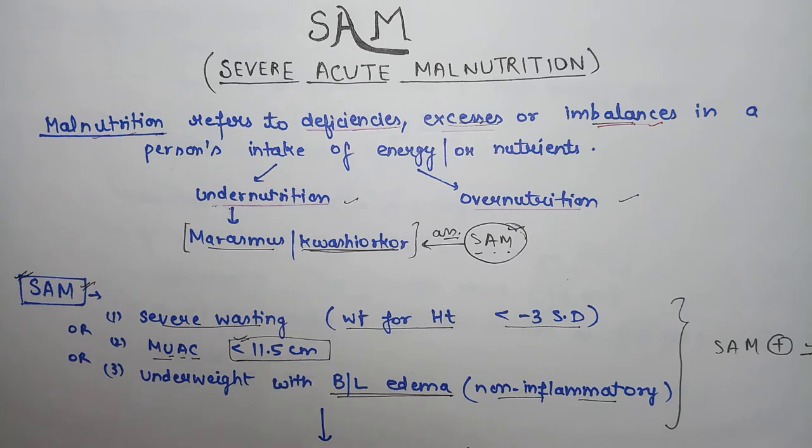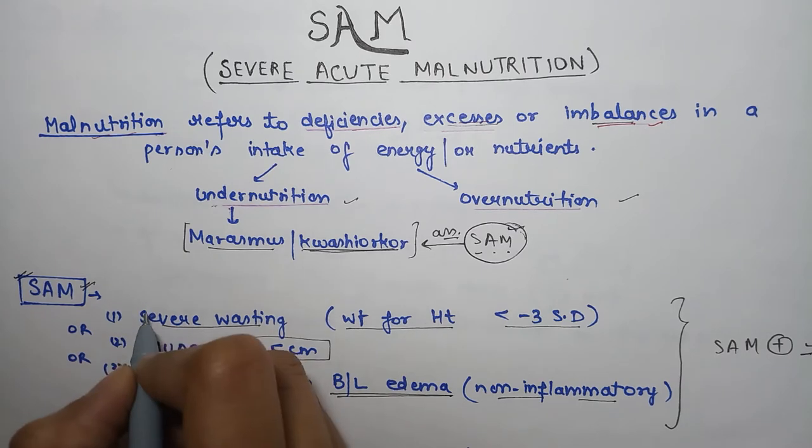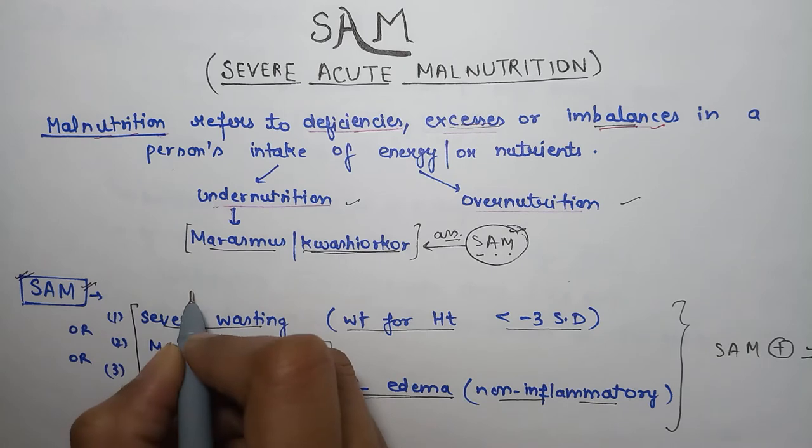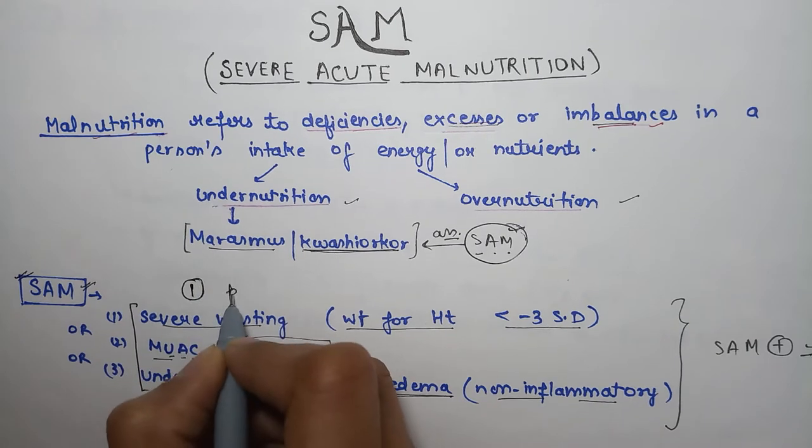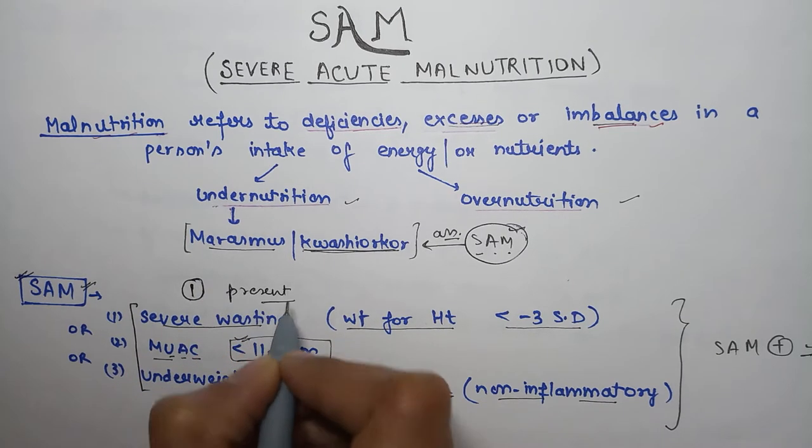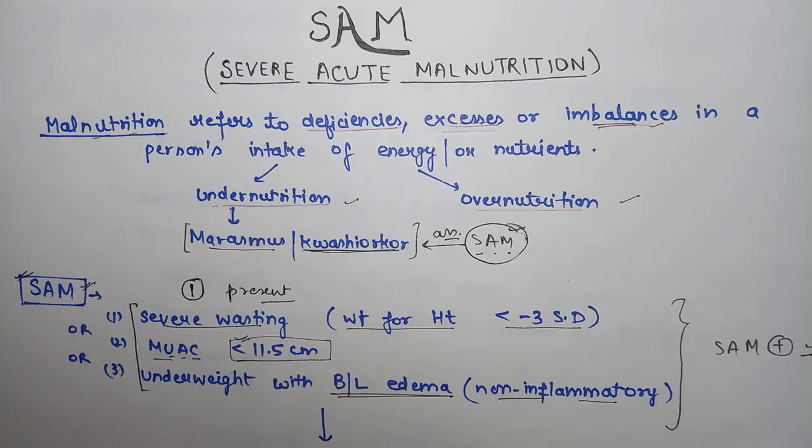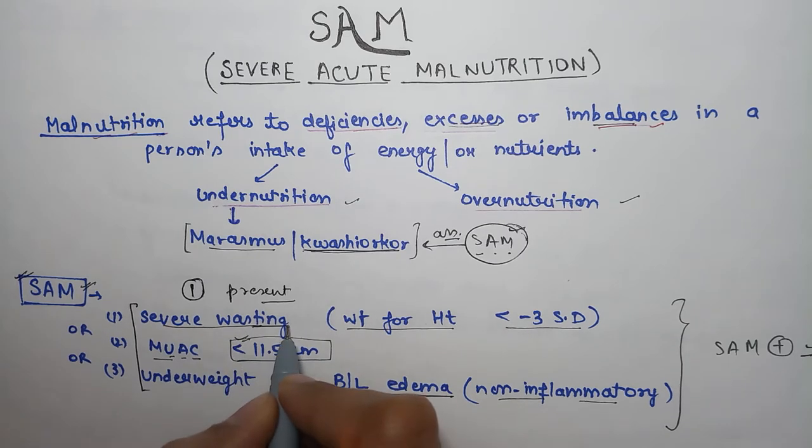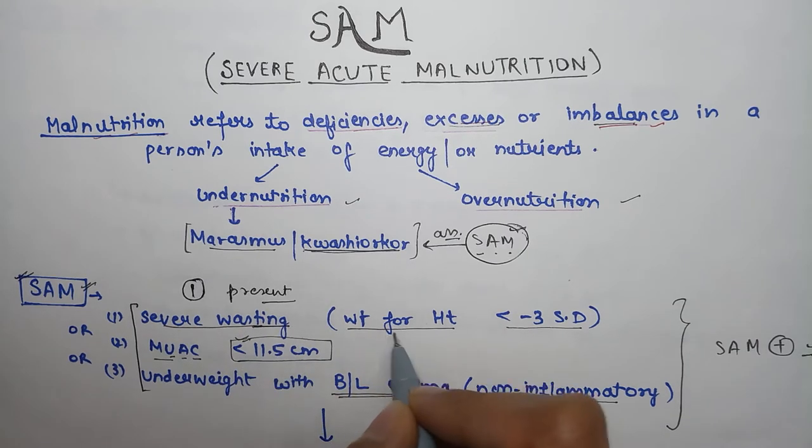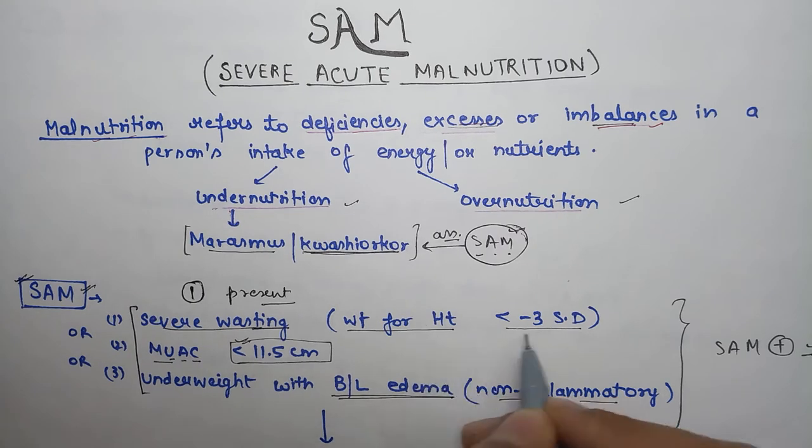We have three criteria for SAM. If one of these three criteria is present, we will say that child has severe acute malnutrition. First is severe wasting - weight for height less than minus 3 standard deviations means SAM.